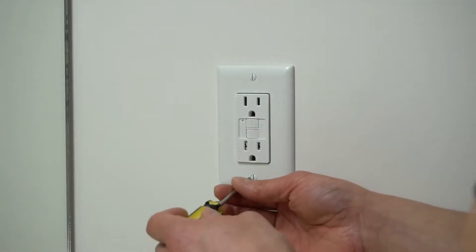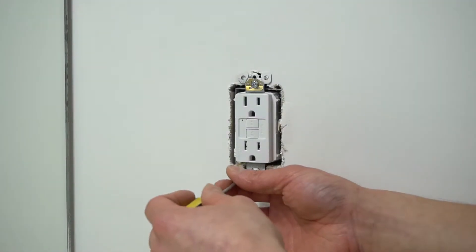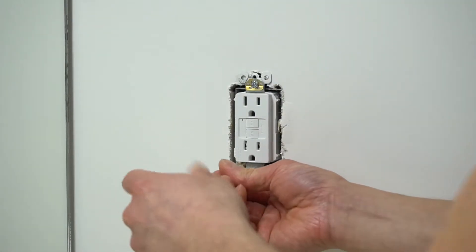Step number two, we need to take off the plate cover. Now let's loosen the screws for the outlet.